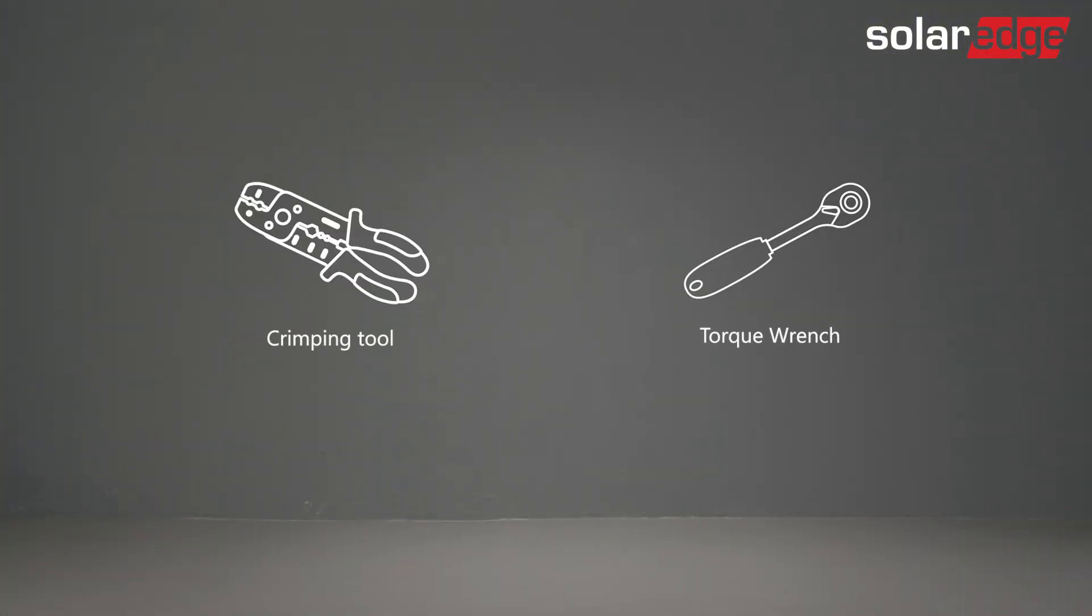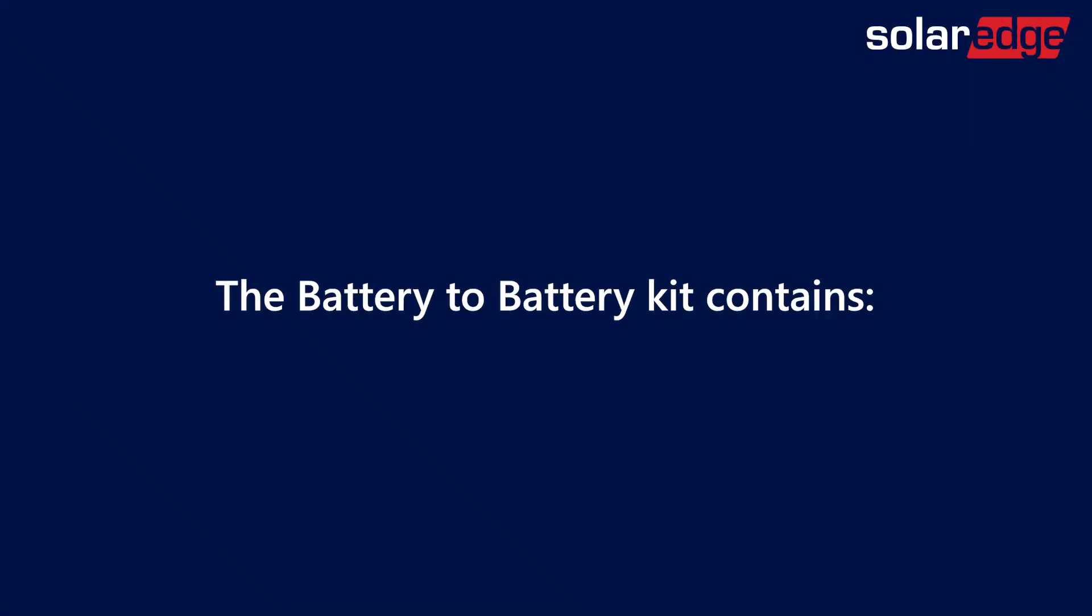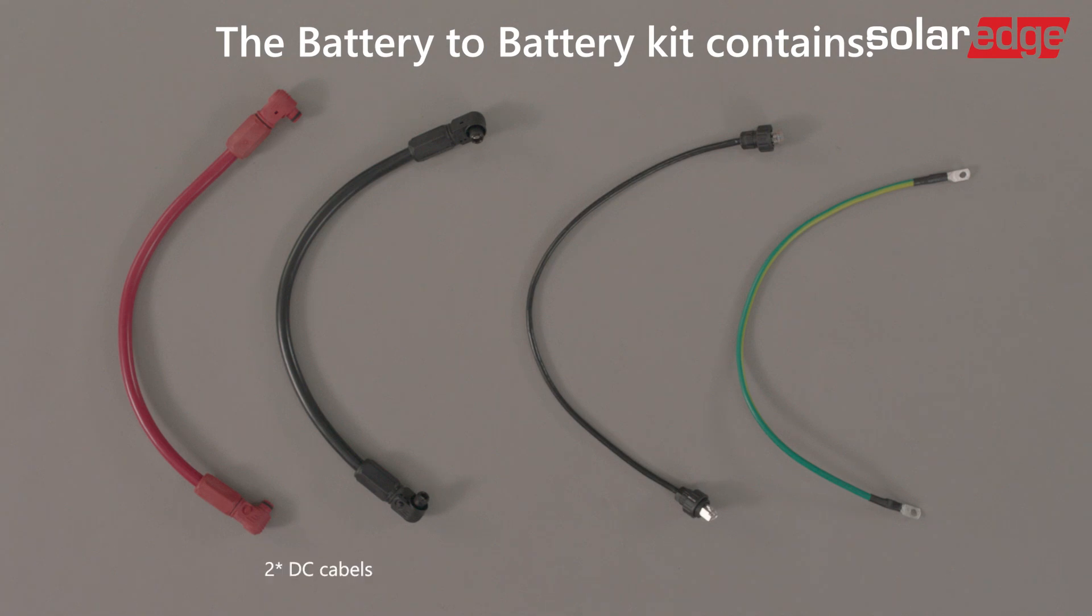Let's quickly review which tools are needed to complete the battery wiring. In the battery-to-battery kit included in the package, you will find two DC cables, a communication cable, and a grounding cable.